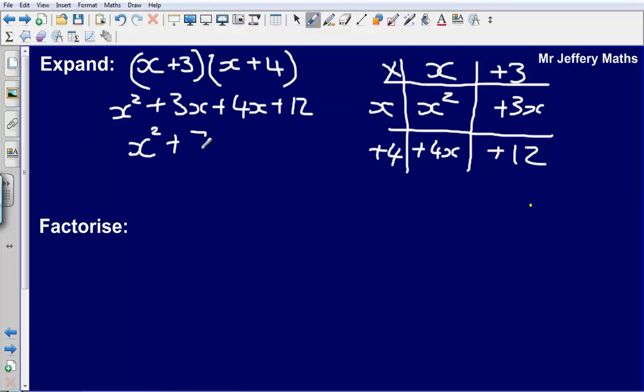So 3x plus 4x can be collected together to give us plus 7x plus 12, and that there would be my final answer.